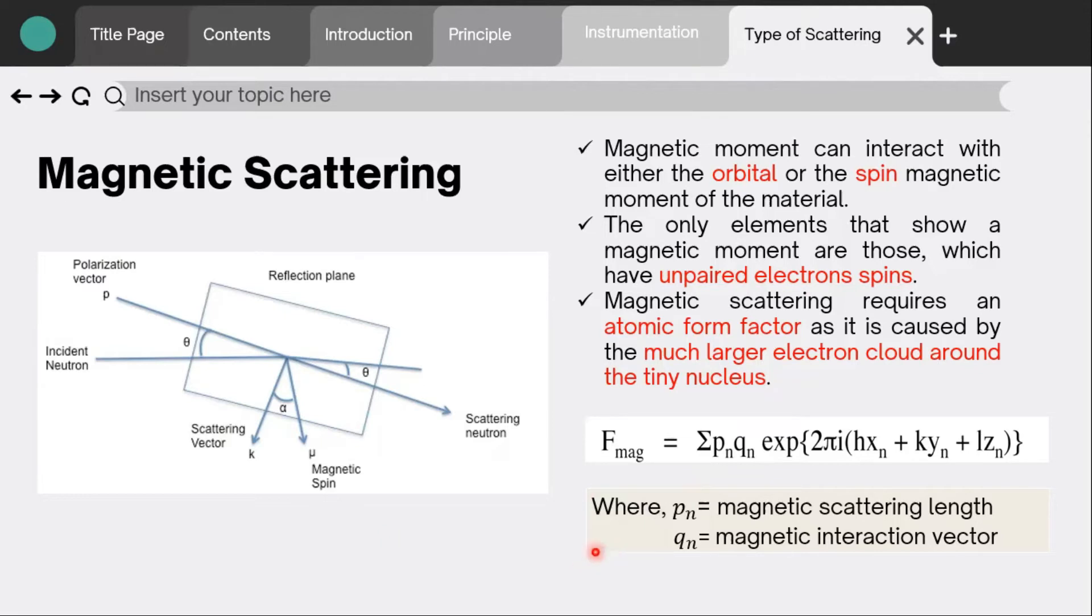Therefore, the magnetic structure amplitude will be given by these equations, where pn is the magnetic scattering length and qn is the magnetic interaction vector. The rest of the terms are used to know the positions of the atoms in the unit cell. When this term fmag is squared, the result is the intensity of magnetic contributions from the peak analyzed. These equations only apply to those elements which have atoms that develop a magnetic moment.